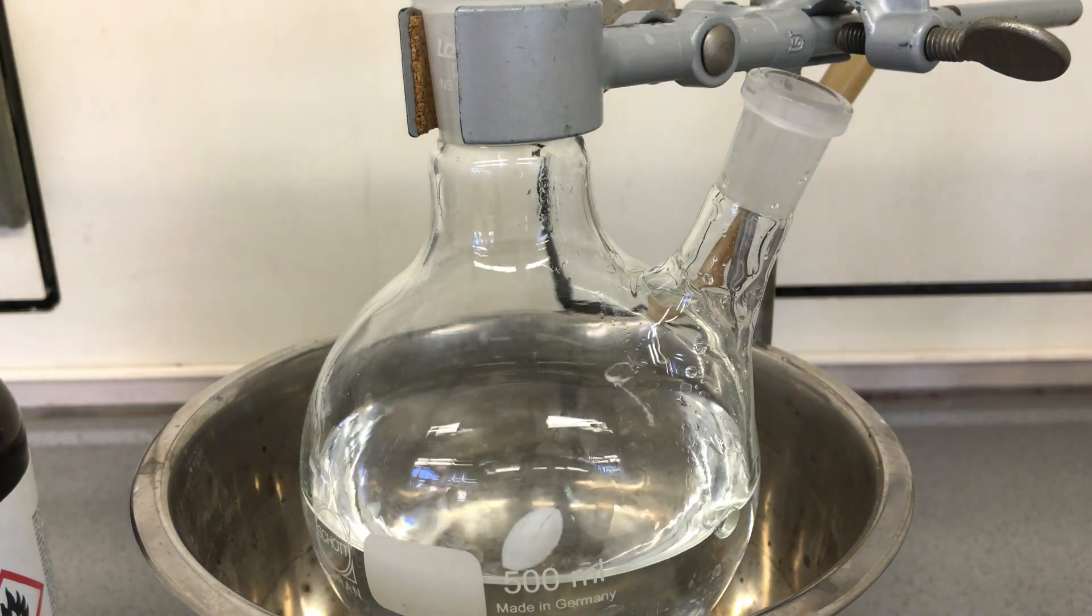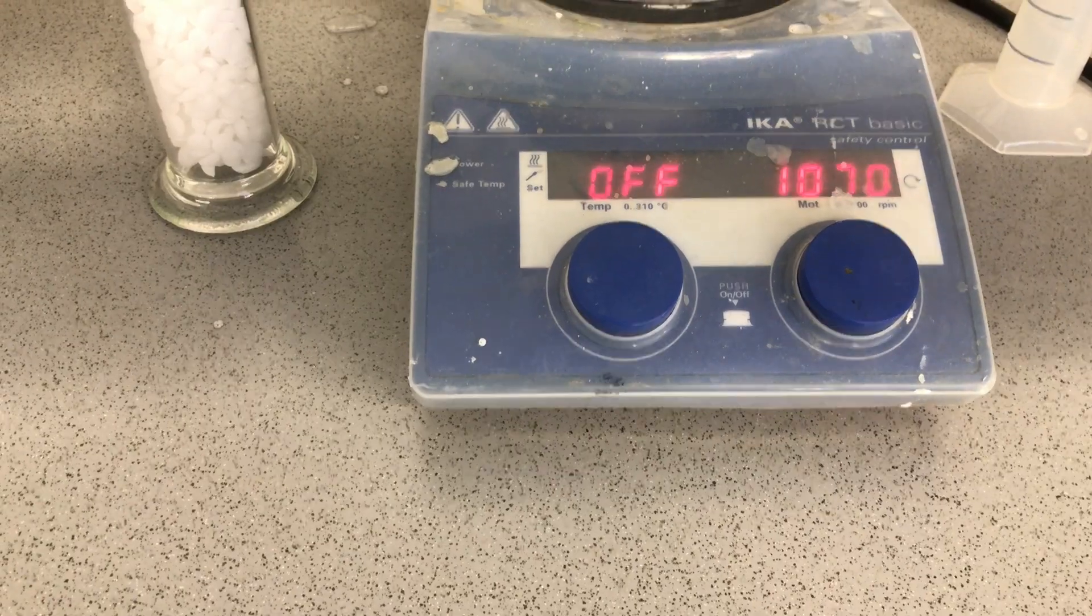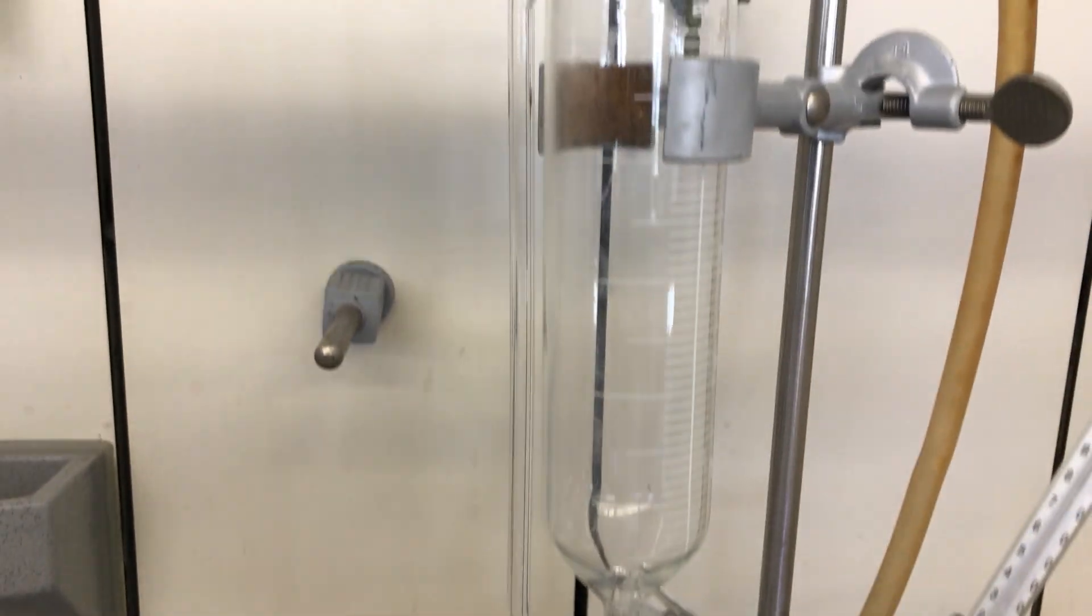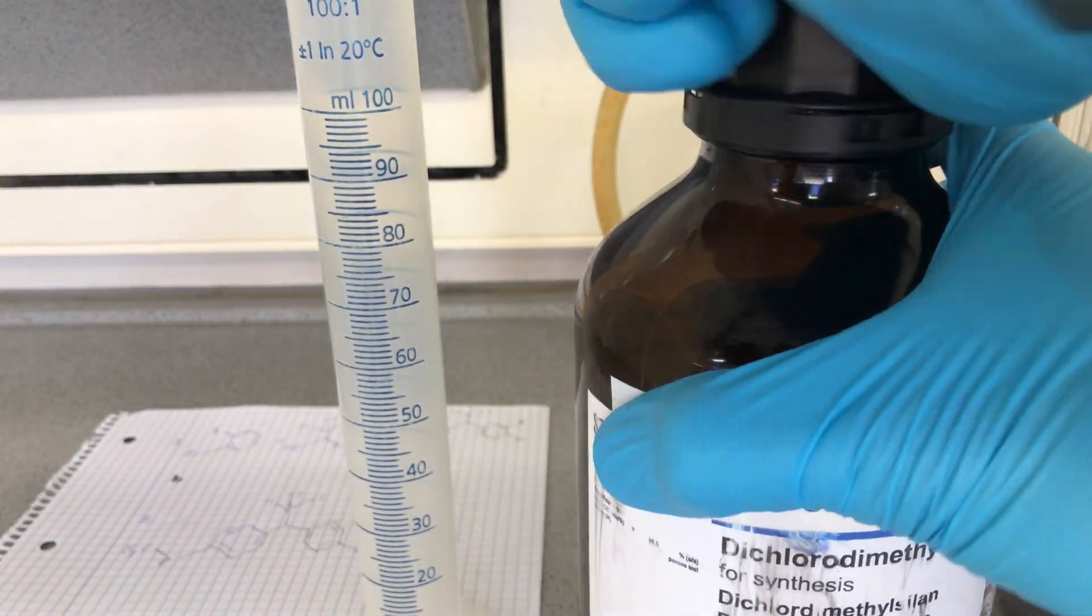The second neck of the flask isn't just there for aesthetics, but it's needed to stick in a thermometer. Have a look at the entire apparatus. We have an ice bath, our reaction flask and a pressure equalizing addition funnel. It is crucial to perform the next step under a fume hood.